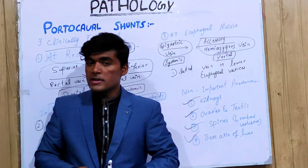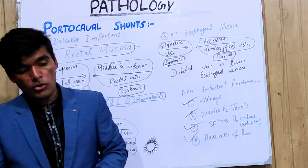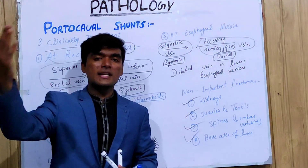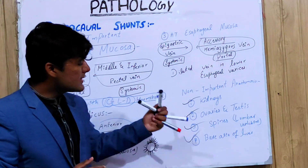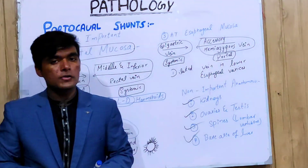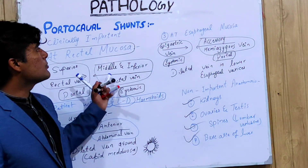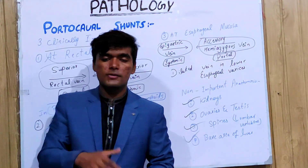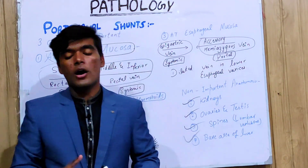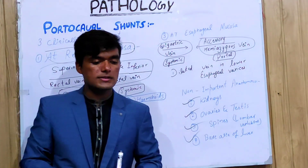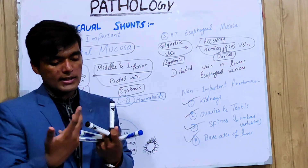So these are the basics of our lecture on portocaval shunt — its pathology, clinical importance, and non-clinical importance. In this series, the next lecture will be on liver cirrhosis and chronic liver diseases. In this quick overview, we discussed what portocaval shunt is, its purpose, how it develops, what its components are, and its clinical and non-clinical importance.